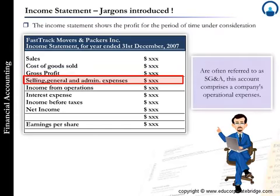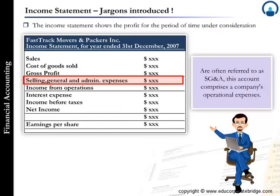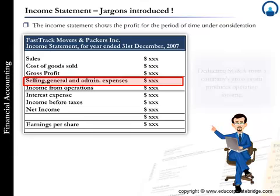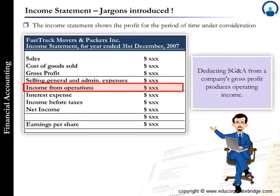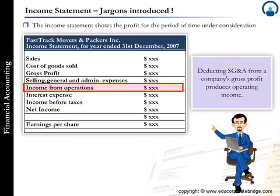Selling, general, and administrative expenses are often referred to as SG&A. This account comprises a company's operational expenses. Deducting SG&A from a company's gross profit produces operating income.